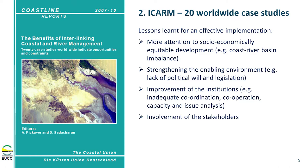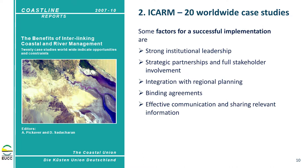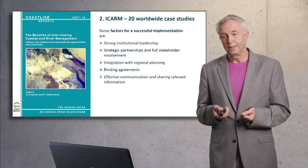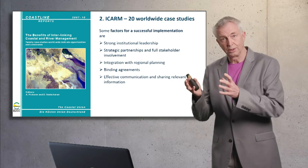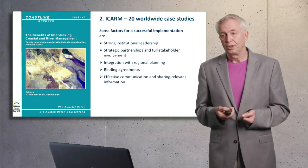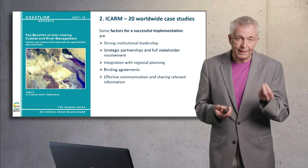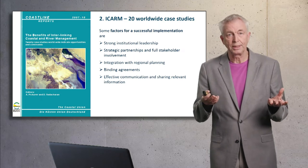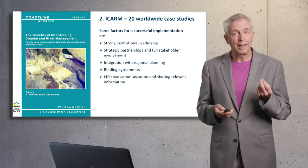Last but not least, stakeholders must be involved — those who are affected, the decision-makers from coast and river basin — and they have to meet. The lessons learned show that factors for successful implementation include strong institutional leadership to run the entire process, strategic partnerships, and full stakeholder involvement. It helps to link this approach to spatial planning, and binding agreements between river basin and coast are needed, along with effective communication and sharing of relevant information. This is especially important because river basins are often transboundary, with different languages spoken, which hampers these kinds of developments.